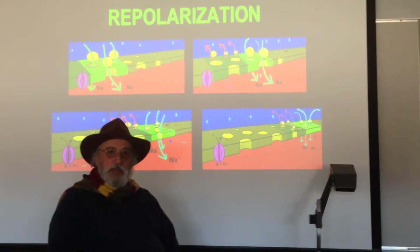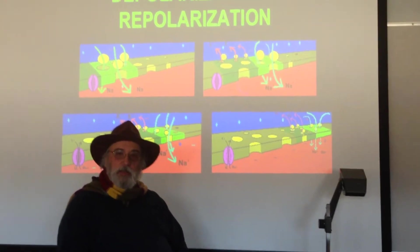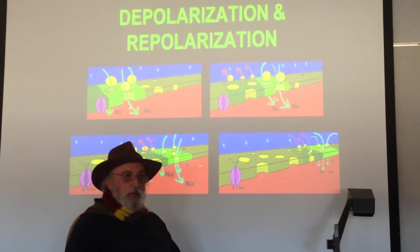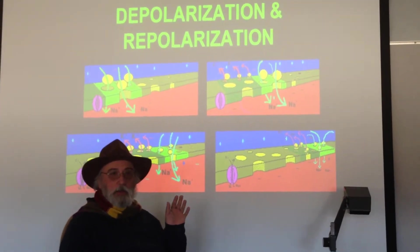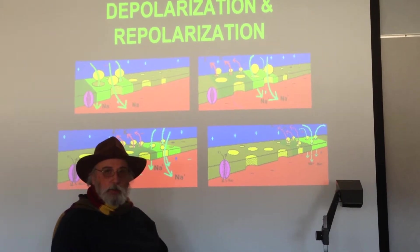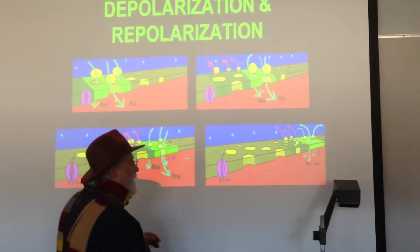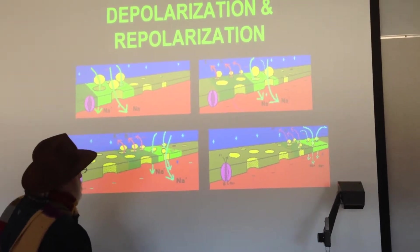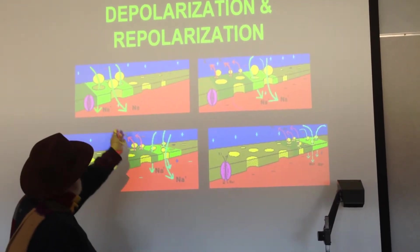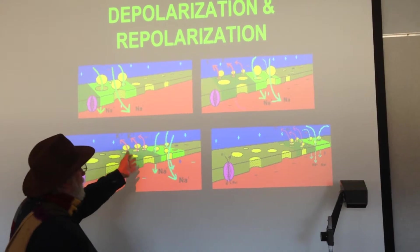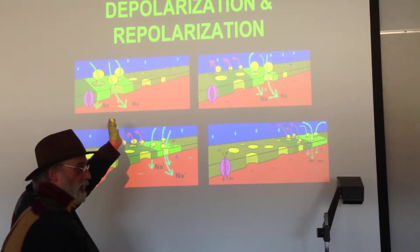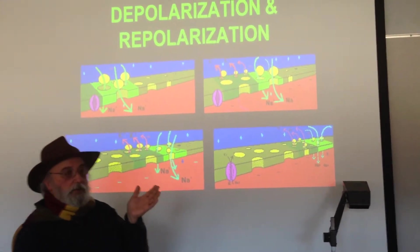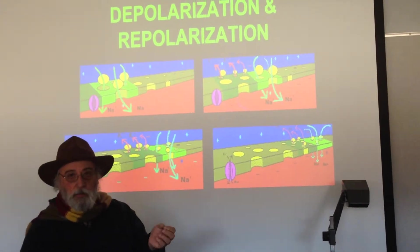We're back with Zach, our trusted camera person, and we're going to continue with the nerve impulses and try to explain them again in terms of ion exchange. What we can see again is sodium channels in and potassium channels out. You need channels because the membrane is loaded with cholesterol.